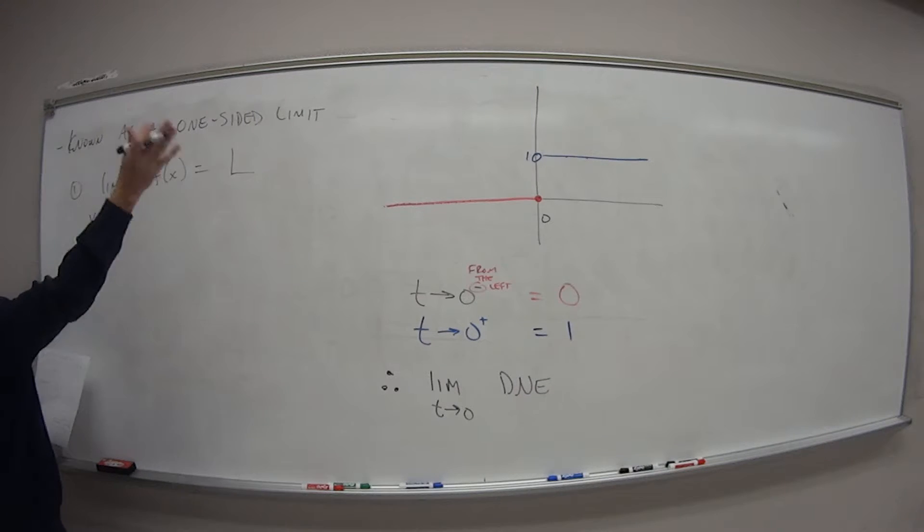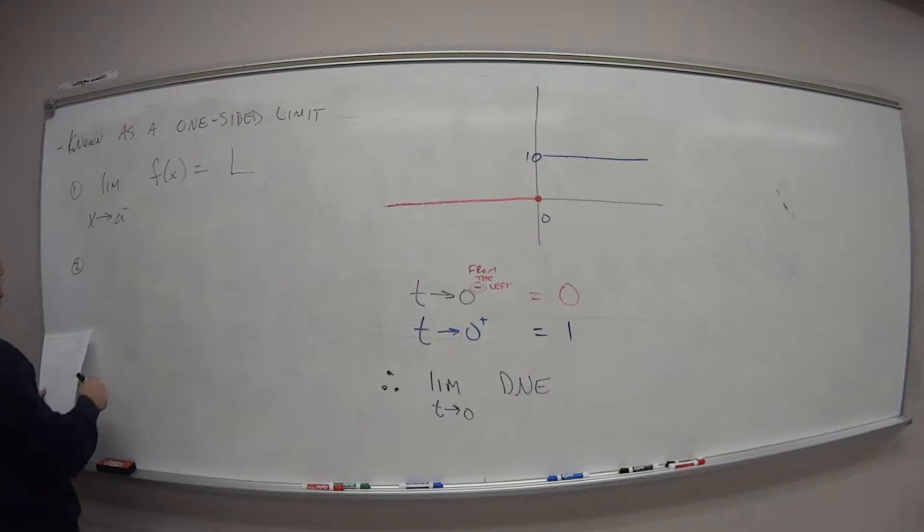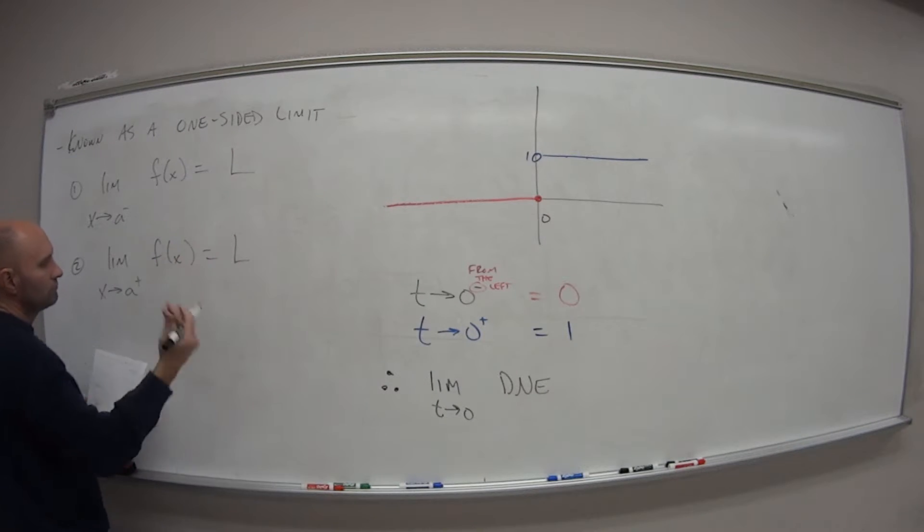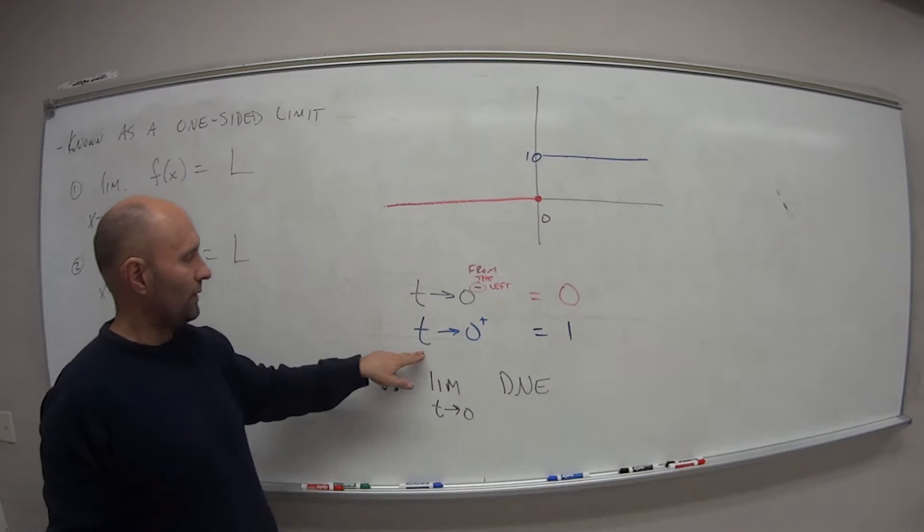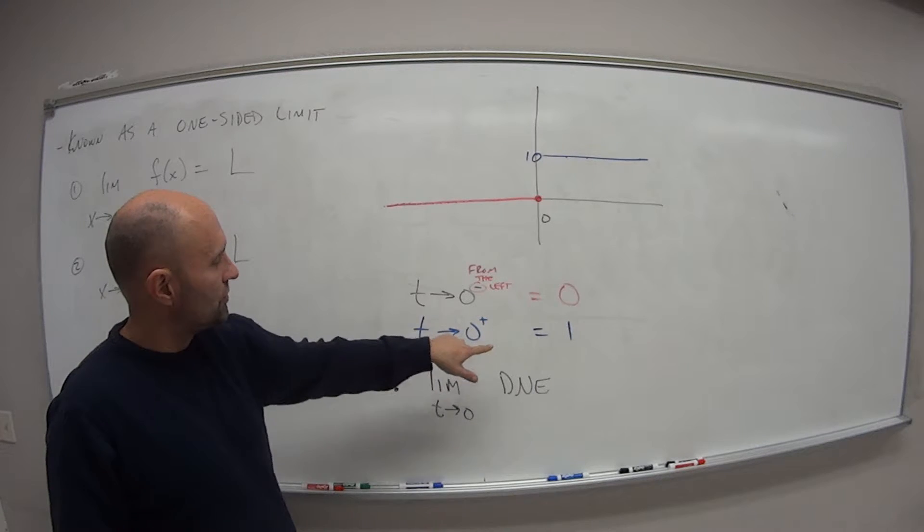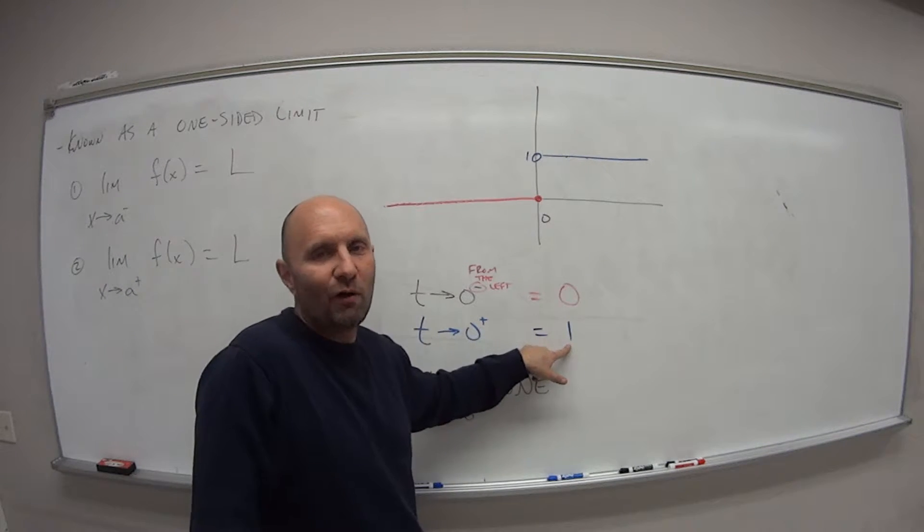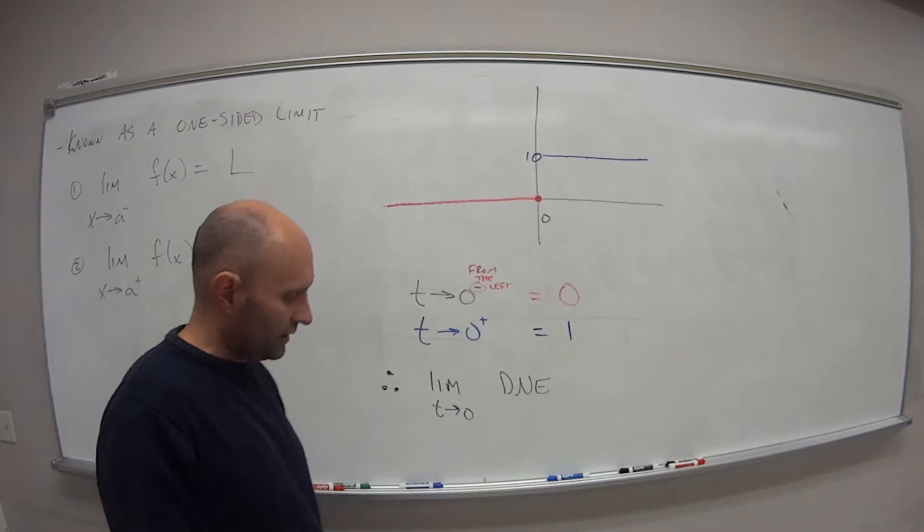Or if it's a right-handed limit, again, just one side, same idea. The limit as x approaches a from the right side, the little plus of f of x is equal to some value L. So in this case, as 0 approached, as t approached 0 from the right side, our value L, the limit that it went towards was equal to 1.